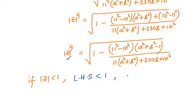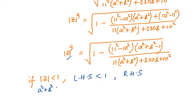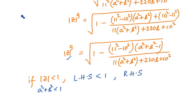But what happens to the RHS? If mod z is less than 1, then a squared plus b squared is less than 1. In that case, the quantity (a squared plus b squared minus 1) becomes negative, making the subtracted term negative, so the whole quantity inside the root becomes greater than 1. Therefore RHS is greater than 1 — a contradiction, since LHS is less than 1.